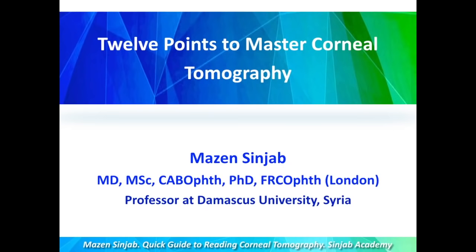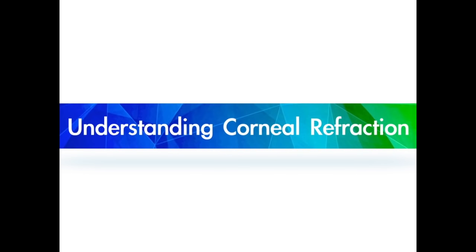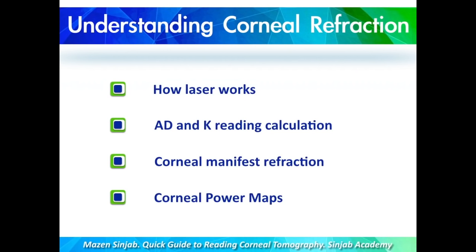12 points to master corneal tomography, Part 3: Understanding corneal refraction. This topic will be discussed in terms of how laser works, ablation depth and K-reading calculation, corneal manifest refraction, and corneal power maps and their applications. In Part 3, I will discuss the first two topics — how laser works and how to calculate ablation depth and K-reading. In Part 4, the other two topics will be discussed.